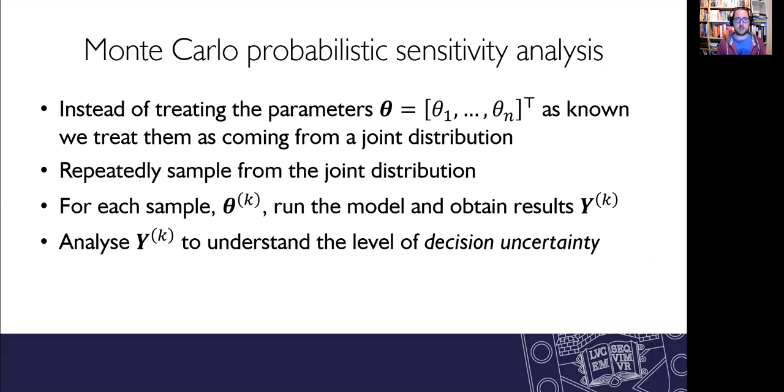And the gold standard for doing this is typically a Monte Carlo probabilistic sensitivity analysis. So rather than assuming that those inputs are fixed and known, we instead treat them as coming from a joint probability distribution. We repeatedly sample from that joint distribution and then for each of those samples, we run the model and we obtain the corresponding results.